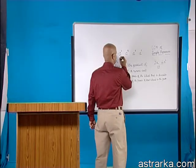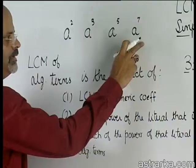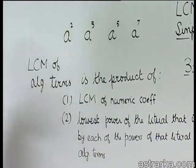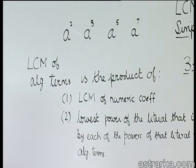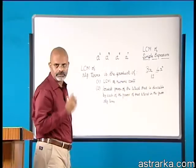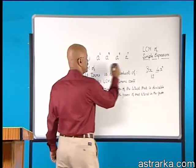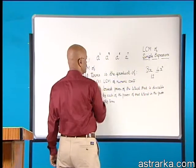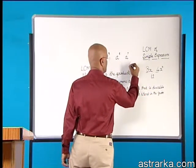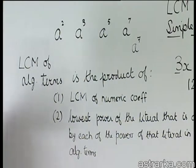Find out the lowest power of A that is divisible by each of these literals, each of these powers. The lowest power of A that is divisible by each one of them is simply A power 7.